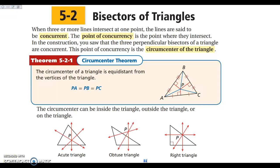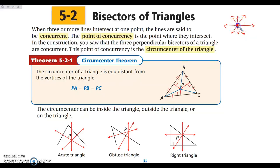Today we are looking at chapter 5 section 2, which is bisectors of triangles. Starting off with some important vocabulary: when we have multiple lines intersecting at one point — three lines or more — they are called concurrent. All of these lines are concurrent, and where they intersect is called your point of concurrency.